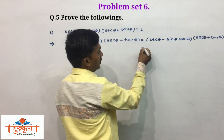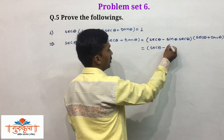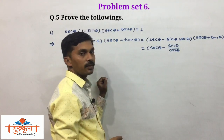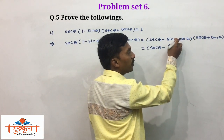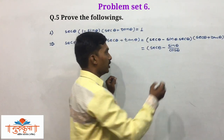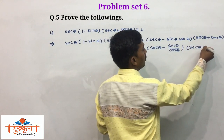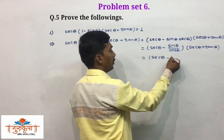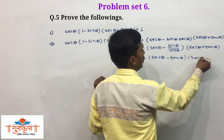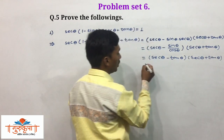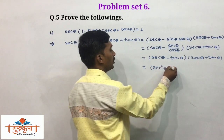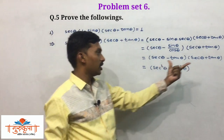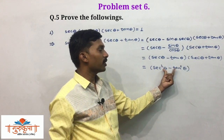Here we write sec theta as it is, minus sin theta upon cos theta, because we can write sec theta as 1 upon cos theta — so 1 multiplied by sin theta is sin theta and cos theta remains. This bracket closes into the second bracket (sec theta plus tan theta). Now we have: sec theta minus tan theta into (sec theta plus tan theta). The product is sec squared theta minus tan squared theta, using the identity (a plus b)(a minus b) equals a squared minus b squared.